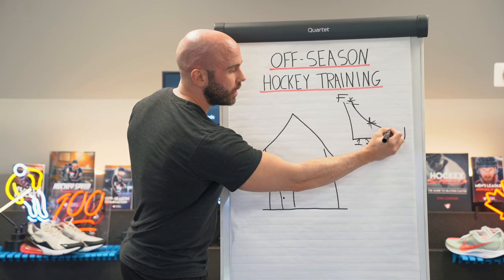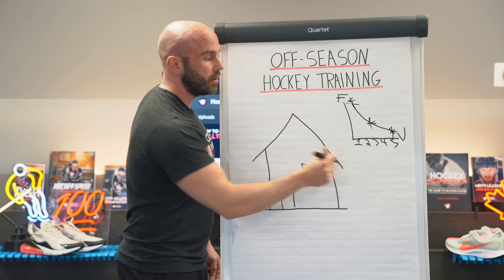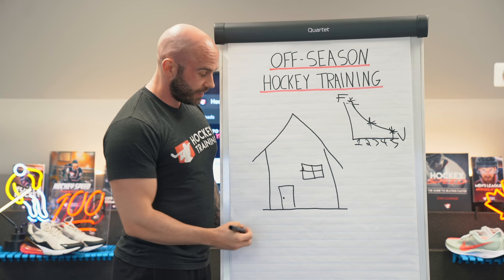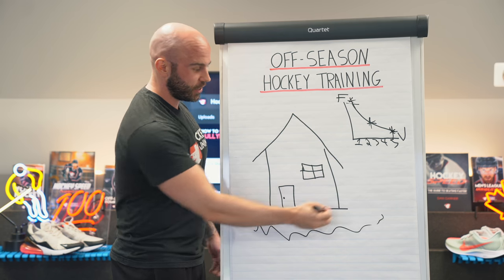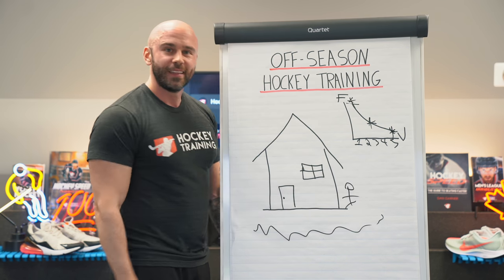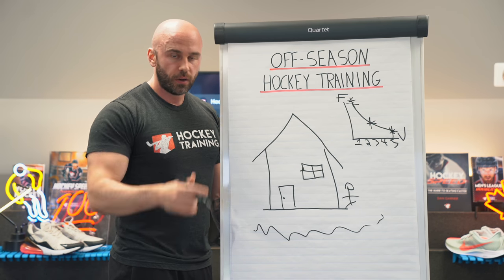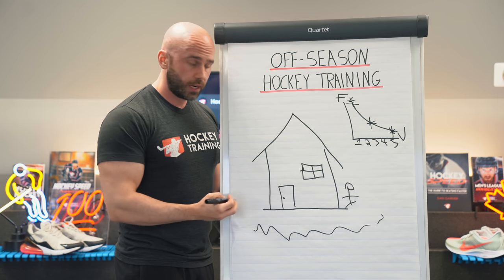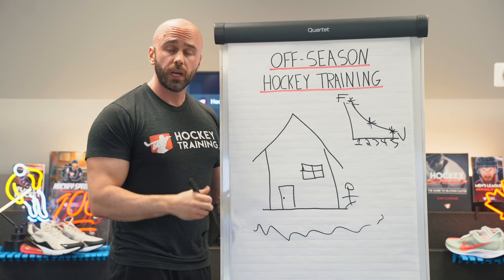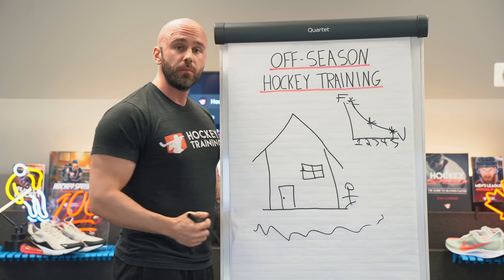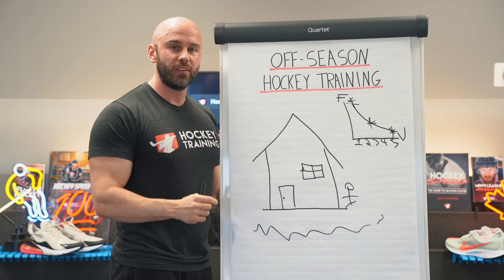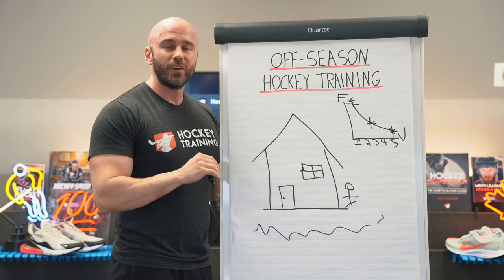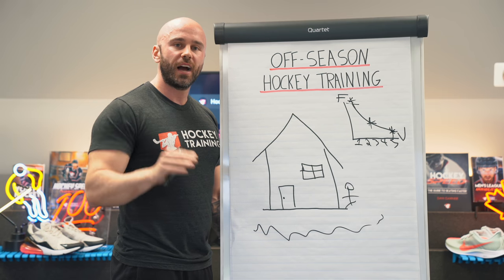That's how the training program should be designed, because now we're way down the force-velocity curve. And at the very end, you could say the front yard — the taper and peaking phase — is where you're ready to invite people over. We've done structural balance and recovery, strength and hypertrophy, explosive power and speed, maintained that explosive power all game long, and now we taper and peak so you move into the next season a blazing fast hockey player.